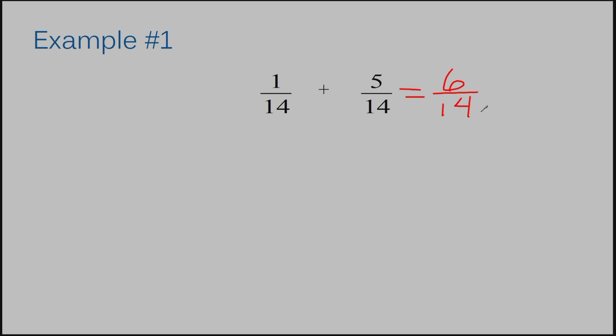This answer can be simplified, so that means I can divide my numerator and denominator by something that is the same number. They're both even, so whenever your numerator and denominator are both even, that means two can always go into both of them. I'm going to divide by two. Six divided by two is three, and fourteen divided by two is seven. There's nothing that can go into both three and seven, so three-sevenths is my final answer.